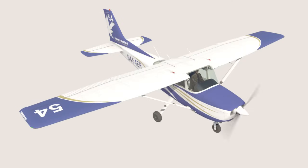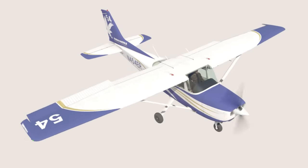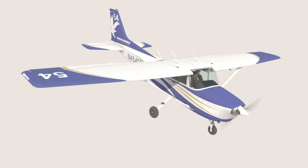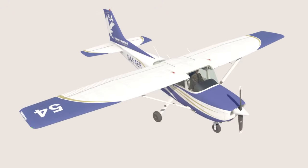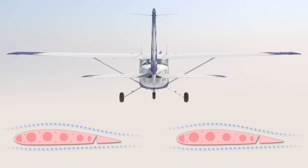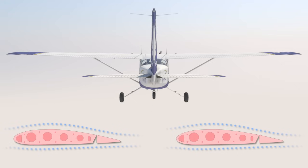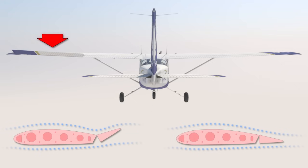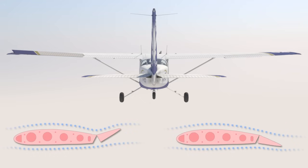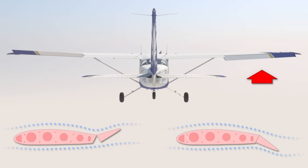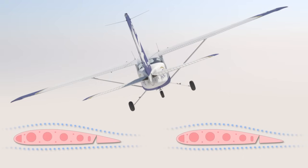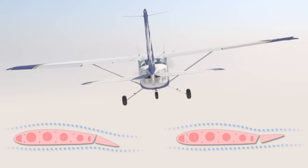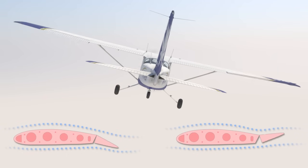The ailerons are located on the back end of the wings out towards the tip and control the aircraft's roll or bank. When the pilot moves the controls to the left, the left aileron is deflected up, creating a downward force, and the right aileron is deflected down, creating an upward force. This results in the airplane rolling to the left. The opposite would happen if the pilot were to move the controls to the right.